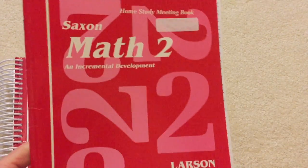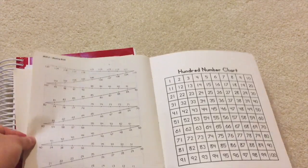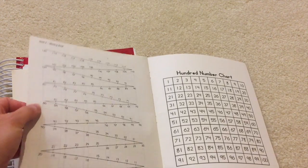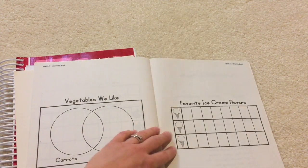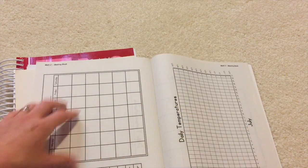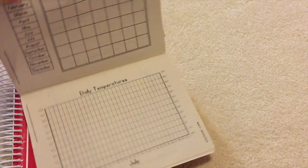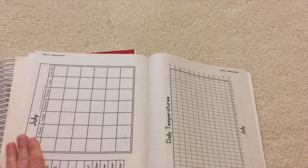Here we have the Home Study Meeting Book, and this has a number chart in the back. It's got line number, number lines, counting strips. It's got lots of things, lots of graphing things to look at. It gives you a calendar, it gives you the weather tracking graph for each of the months.